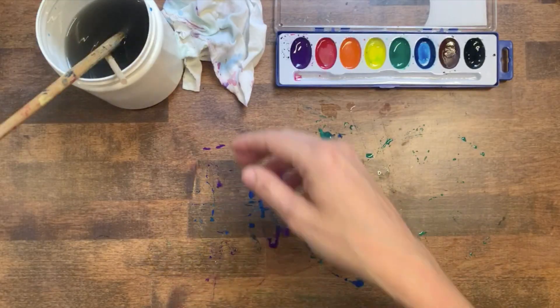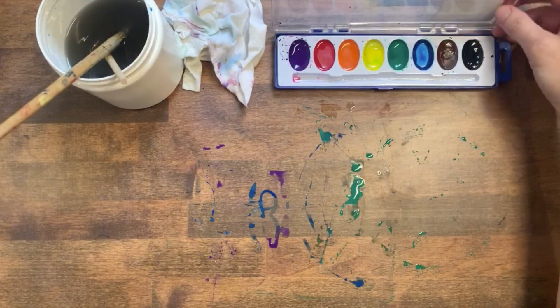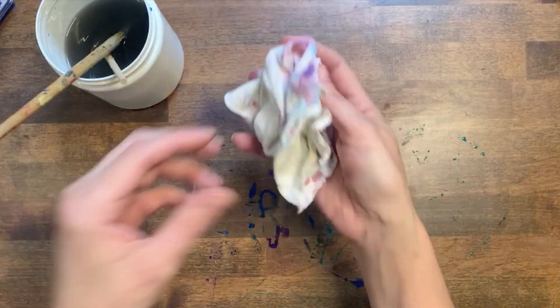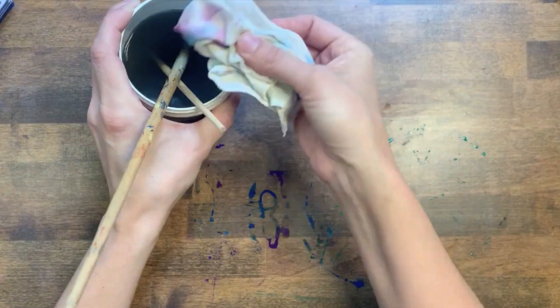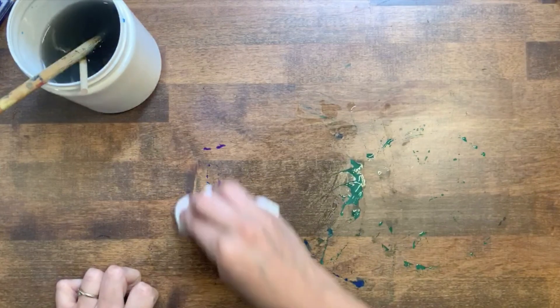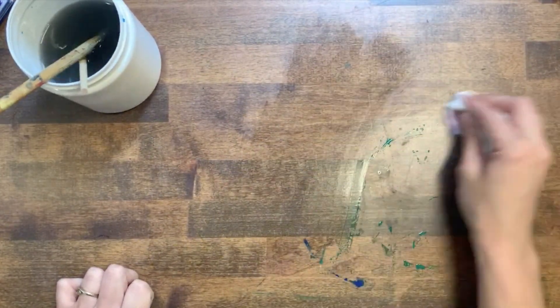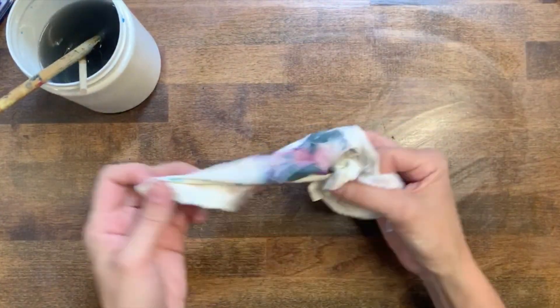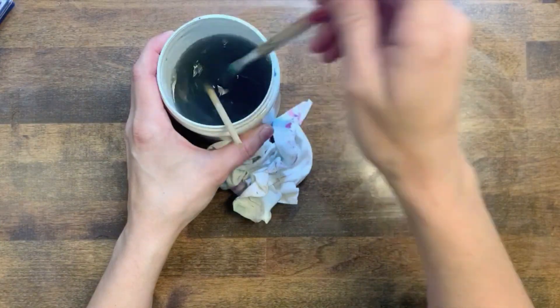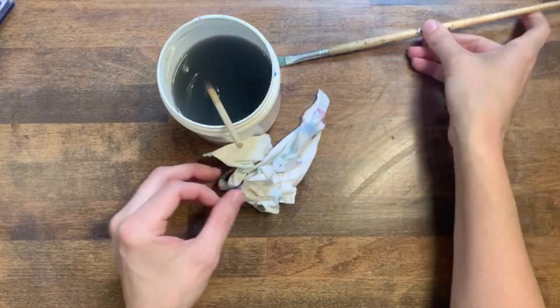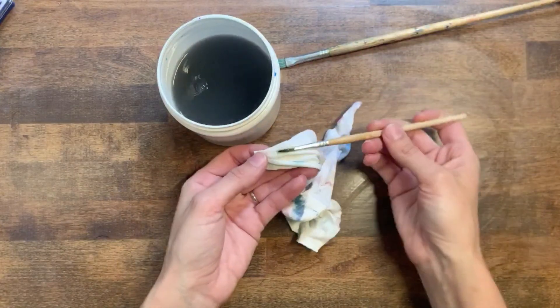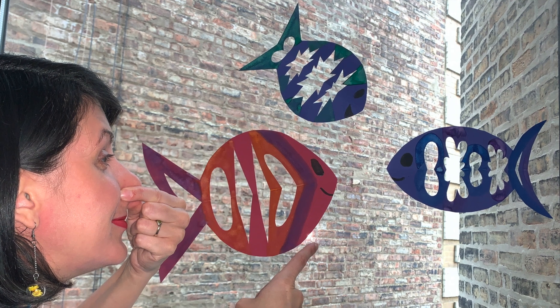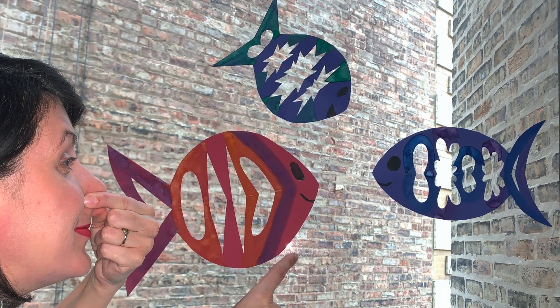When you're done for the day, make sure you clean up your workspace. Put away all your supplies so that your workspace looks as good as it did when you started. If you've got paint on the table, dip the corner of your rag in your water and use it to wipe the paint off the table. Make sure your paintbrushes are rinsed and dried. When your fish are dry, tape them to a window and have a family member take a picture of you swimming with your fish.